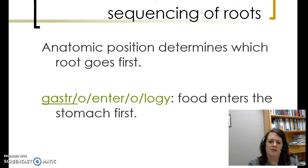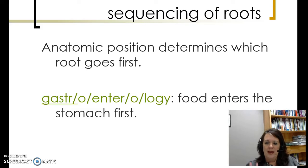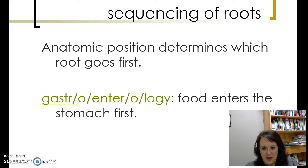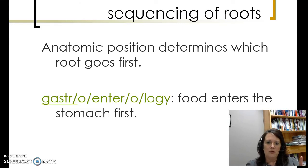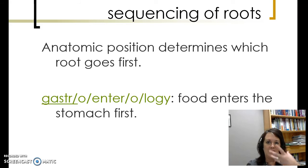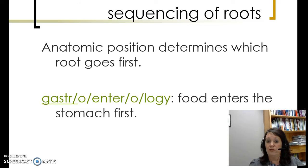Sequencing: anatomic position determines which root goes first. So we have gastroenterology — gastro means stomach, entero means the intestine, and logy is the study of. Food enters the stomach first, so stomach comes first. It's not entero-gastro-logy because the intestine doesn't come first in our body system. It's gastroenterology because the stomach comes first and then the intestine. Anatomic position matters when you're creating bigger terms.